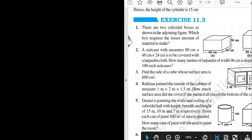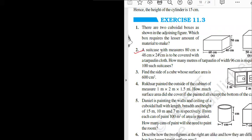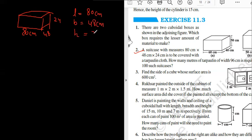So in this part, the second question: a suitcase with measurements 80, 48, 24. Whenever there are three dimensions and they're all different, what is the shape of the figure? Can anyone tell me? Aaron, what do you think? It will be a cuboid. Let me just make a cuboid. So 80 is the length, 48 is the breadth, and 24 is the height. You can write that down: length equals 80 centimeters, breadth equals 48 centimeters, and height equals 24 centimeters.